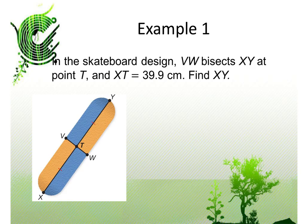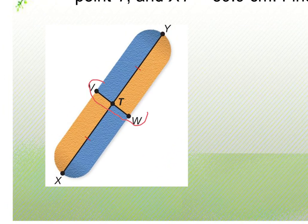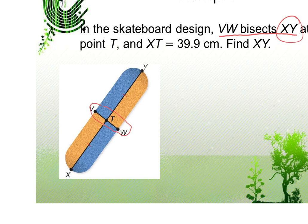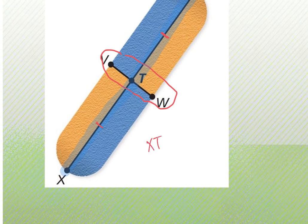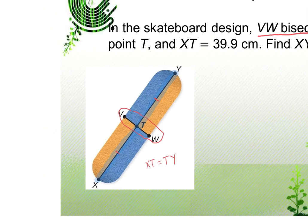Example one: in the skateboard design, VW bisects XY at point T, and XT is 39.9. Find XY. VW is our segment bisector — it bisects XY, cutting it in half. The congruence marks show that XT must be the same length as TY.